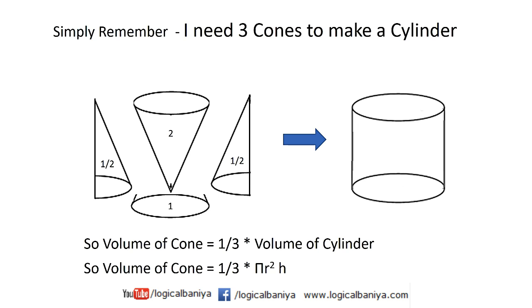Now whenever you want to find the volume of the cone, just use the volume of the cylinder and divide the volume of the cylinder by 3, and you will get the volume of the cone.